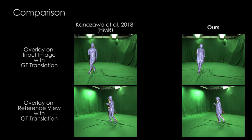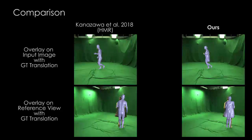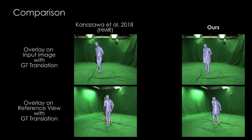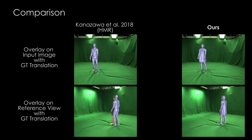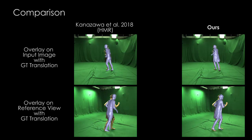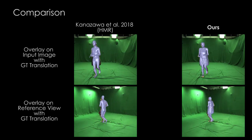First, we compare our method with previous approaches on our evaluation sequences where reference views are available. For all results, we applied the ground truth root translation to make the different methods comparable. Here, we compare against HMR, which is estimating human shape and pose parameters from a single image. Since they leverage a human body model in minimum clothing, they cannot account for clothing deformations, leading to worse overlay compared to our method.